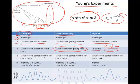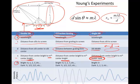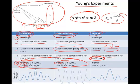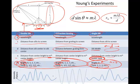X is the distance from the center bright to the m-th center bright for the double-slit. For the diffraction grating, it's the distance from the center bright to the next center bright. For the single-slit, X is from the center bright to the m-th center dark — that is the main difference between these setups. For the double-slit and diffraction gratings, whole integer values of m are where the bright spots are, and half-integer values are where the dark spots are. For the single-slit, the center bright is where m equals 0, and the dark spots start with m equal to 1, 2, and 3.